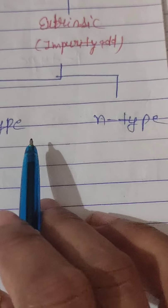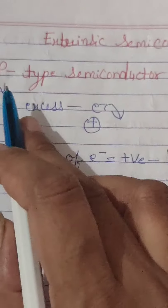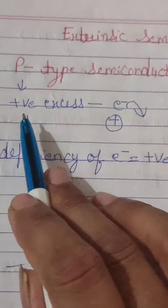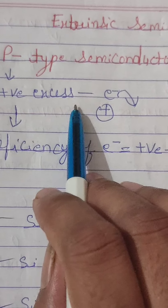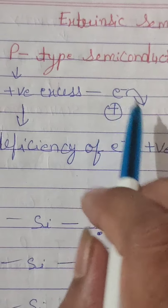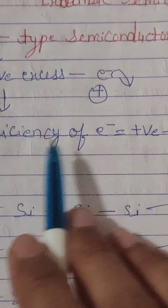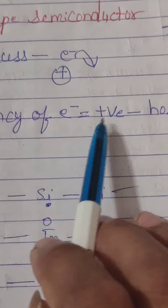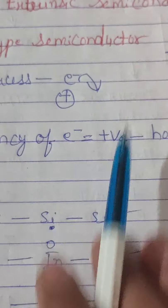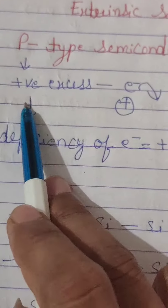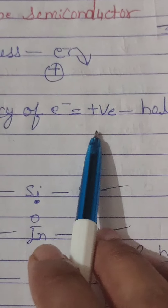Extrinsic semiconductors are of two types: p-type semiconductor and n-type semiconductor. In a p-type semiconductor, there are positive holes in excess. This means electrons are released and positivity is increased — there is a deficiency of electrons. So in a p-type semiconductor there is a positive hole in excess, meaning electrons are reduced.